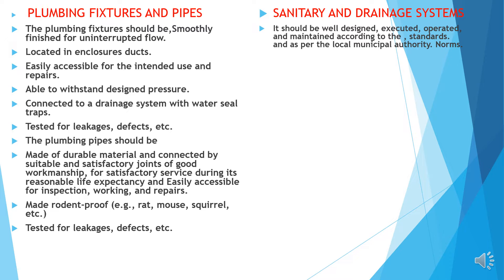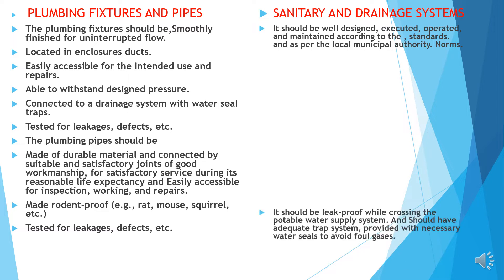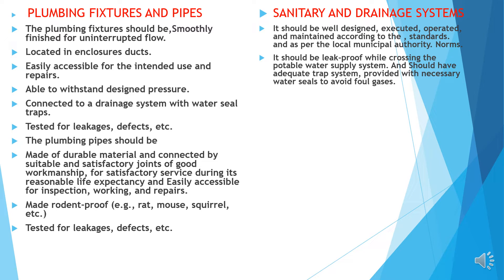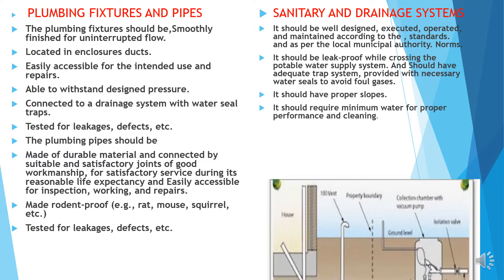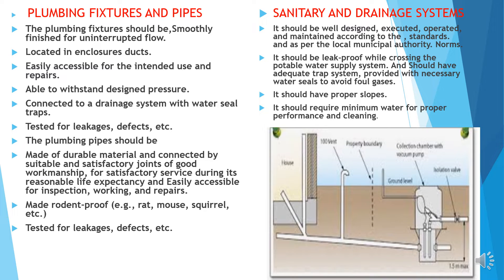Sanitary and drainage system: it should be well designed, executed, operated and maintained according to standards and as per the local and municipal authority norms. It should be leak-proof while crossing the potable water supply system, and should have an adequate trap system with necessary water seals to avoid foul gases. It should have proper slopes and require minimum water for proper performance and cleaning. This is the image of the sanitary drainage system.